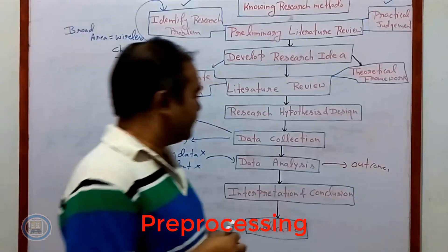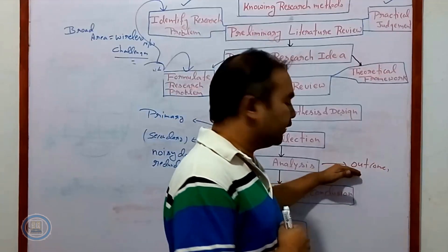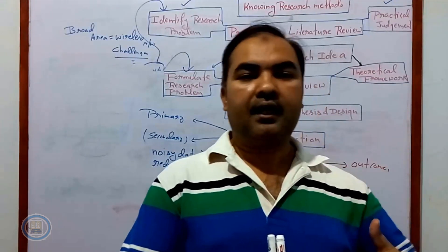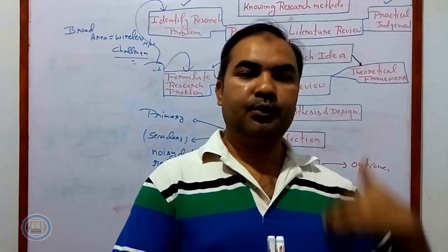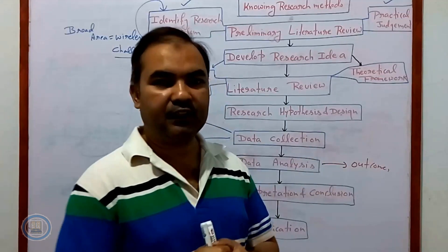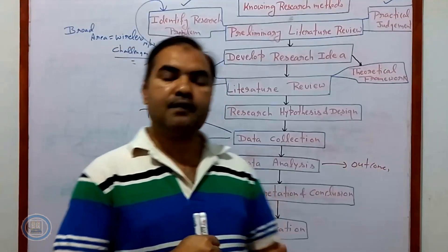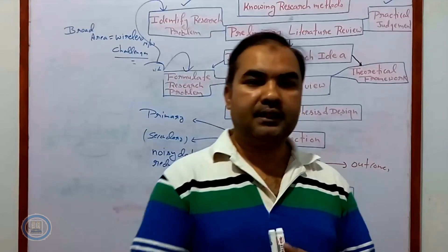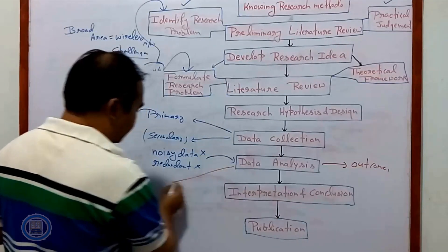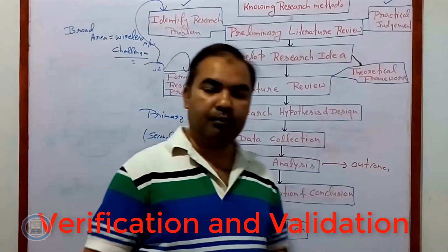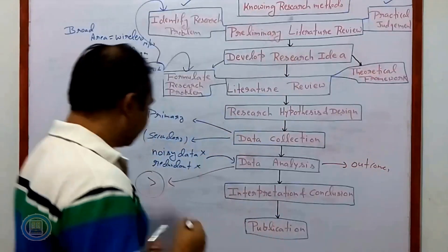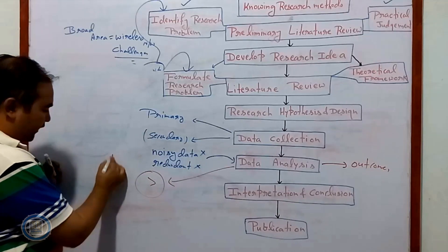After getting the outcome, we need to check for verification and validation. Verification means self-verification of your research — for example, conducting the research with 10 inputs, then 20 inputs, then 30 inputs. Validation means comparing your result with other researchers — the previous researchers. Until and unless your outcomes are better than the previous researcher's results, it will not be acceptable, because better research is already available. So during verification, we go for both verification and validation.